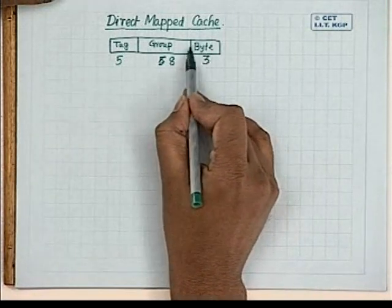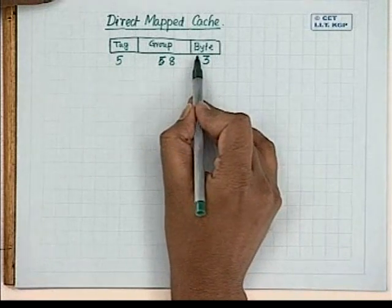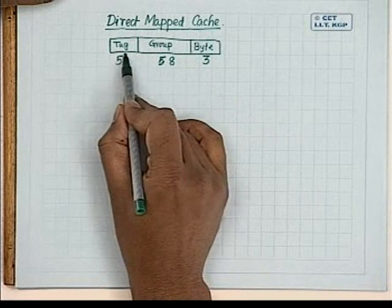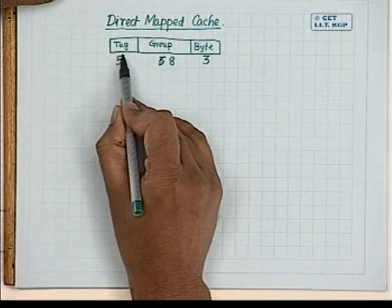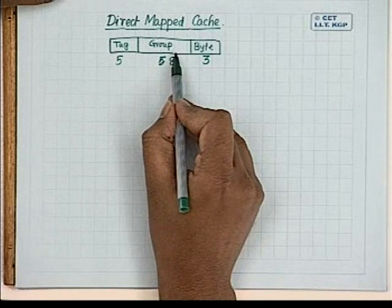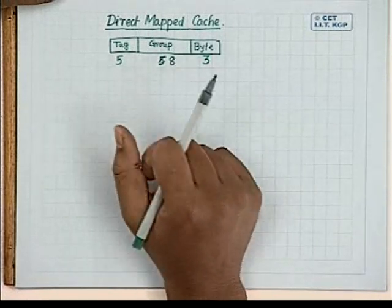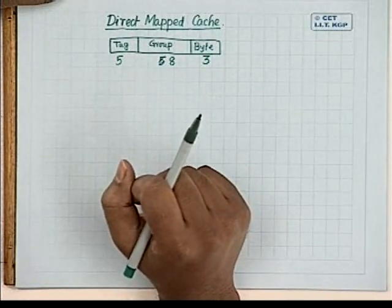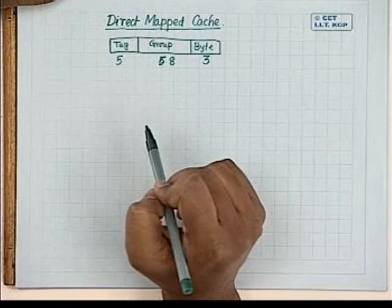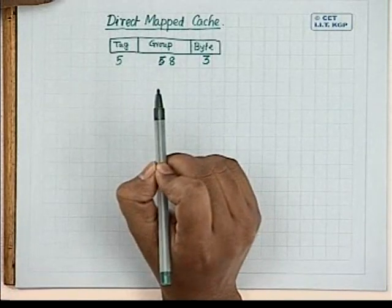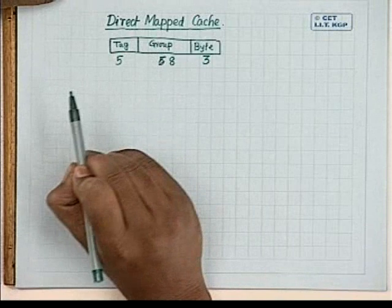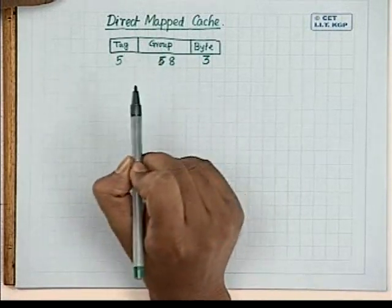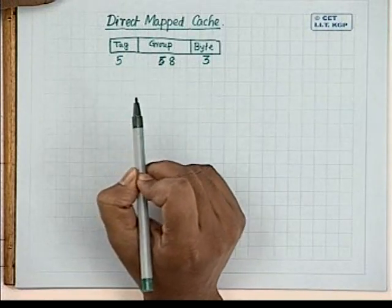Every block in main memory now has a two-component address: one is the tag address and the other is the group address. A number of blocks are grouped together to form a particular group, and a number of blocks share the same tag number. The intersection of a particular group number and a particular tag number uniquely identifies a specific block in main memory.